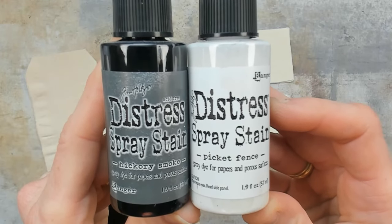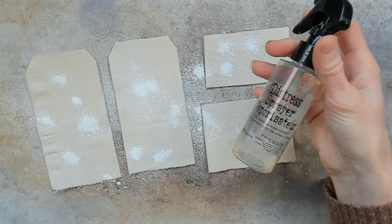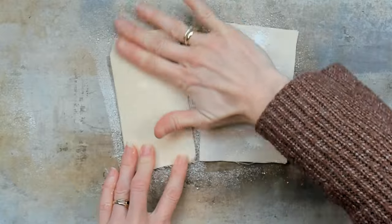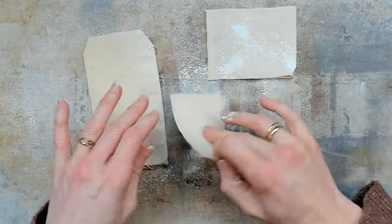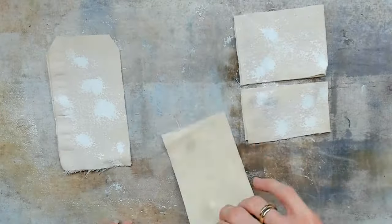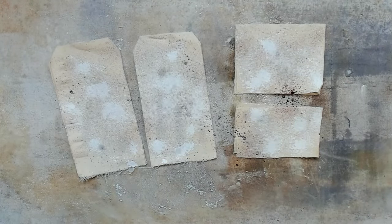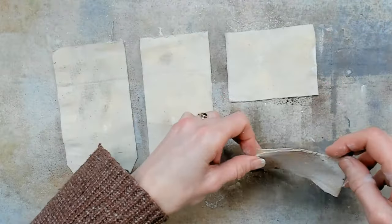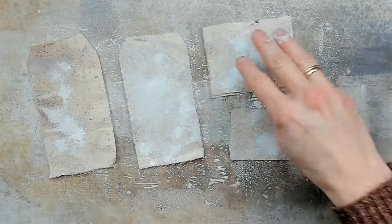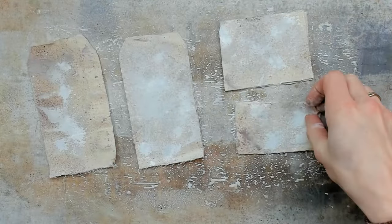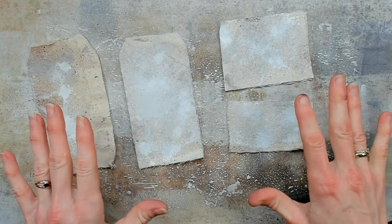I will use the Distress Spray Stain, Hickory Smoke and Picket Fence. Now that we have some color on I will put this to the side so it can dry.